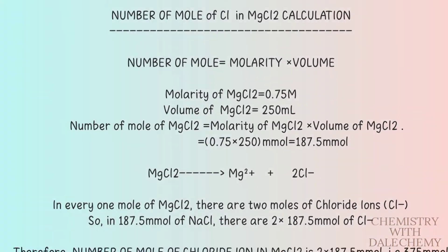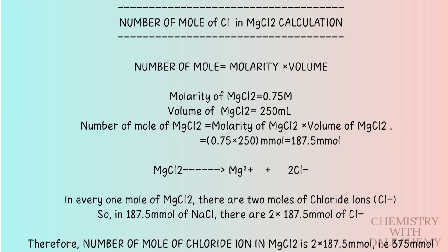Similarly, to get the number of moles of chloride ion in magnesium chloride, we need the number of moles of magnesium chloride itself. The number of moles of magnesium chloride is found to be 187.5 mmol, and in one mole of magnesium chloride there exist two moles of chloride ion. Therefore, in 187.5 mmol of magnesium chloride there exists 2 multiplied by 187.5 mmol of chloride ion, which is 375 mmol.